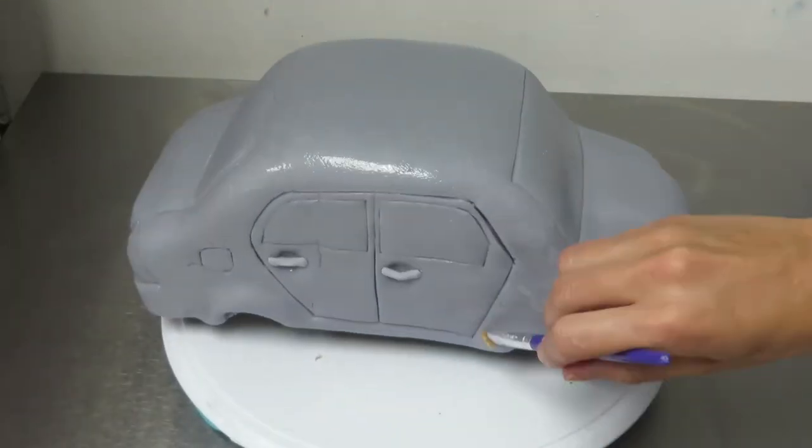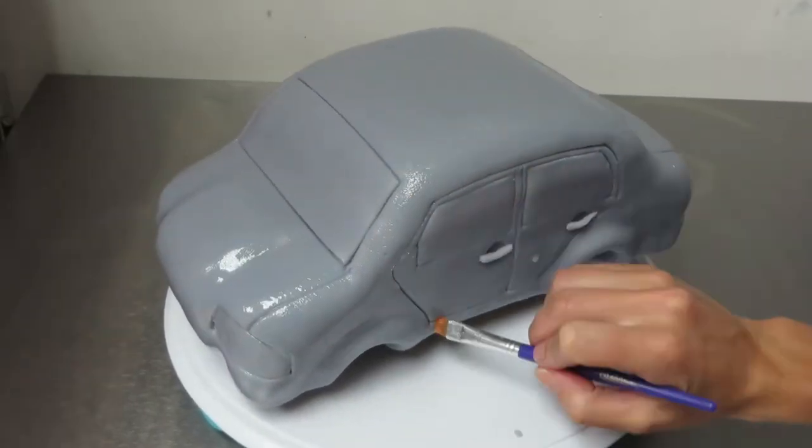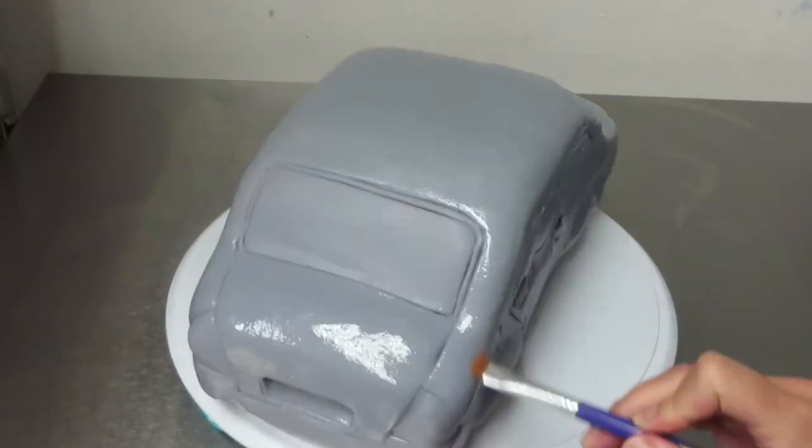This is pearl dust mixed with clear alcohol to make a paint that will give the car a metallic sheen, going all over the cake except for the windows and the windscreens.